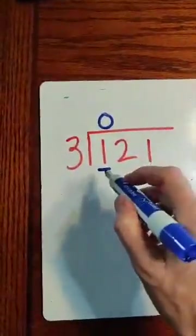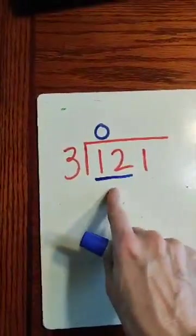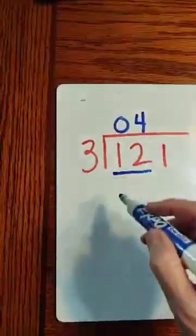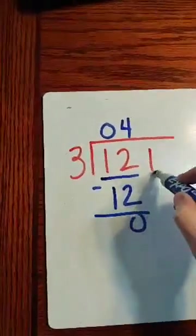3 times 0, oh, we don't need to do that yet. Let's pull another number in. 3 go into 12? Yes, 4 times. 3 times 4? 12, subtract, 0, bring down.